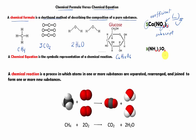Now, what is a chemical equation? A chemical equation is a symbolic representation of a chemical reaction — it describes the chemical reaction. But what is a chemical reaction? A chemical reaction is a process in which atoms in one or more substances are separated, rearranged, and joined.